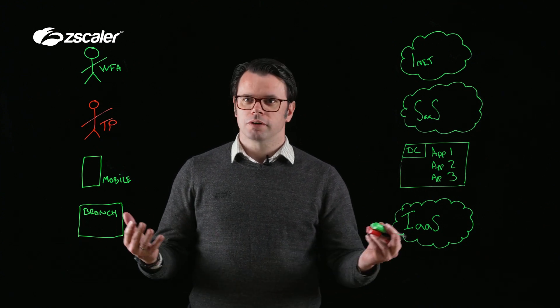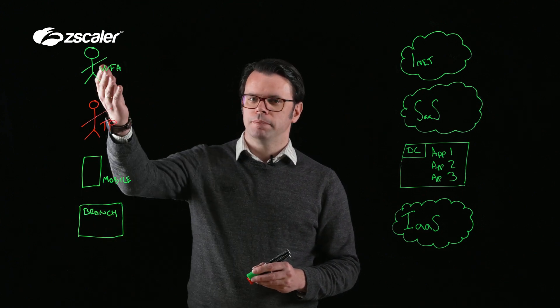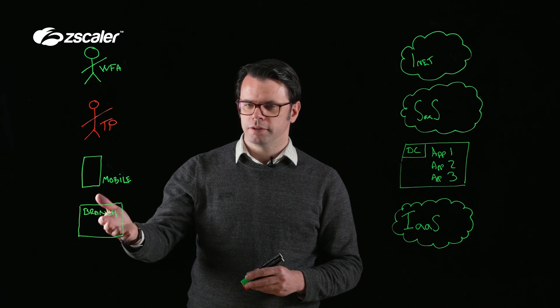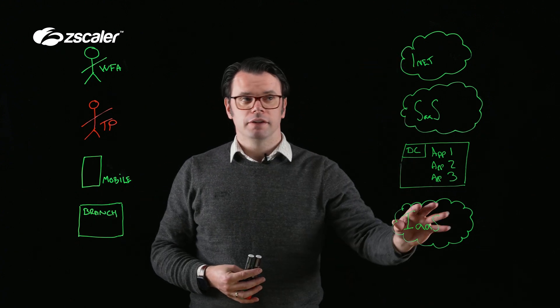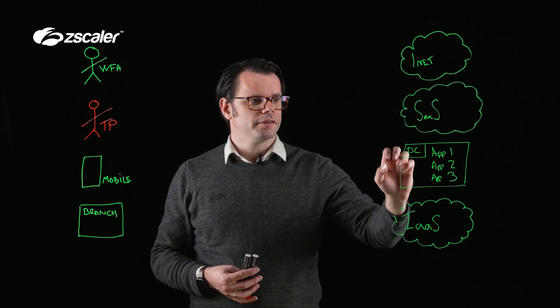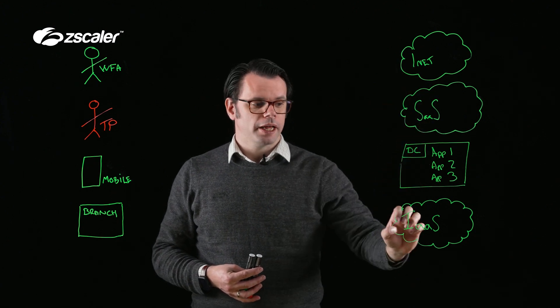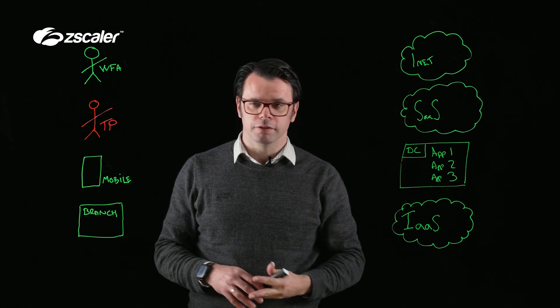So in our diagram on the left here, we have items that we want to connect from. We've got people working from anywhere, third parties, mobile devices, branch offices. And on the right, we have things that we want to connect to - things like the internet, software as a service providers, things like the data center and infrastructure as a service. Your AWS, Azure, GCP, and so on.